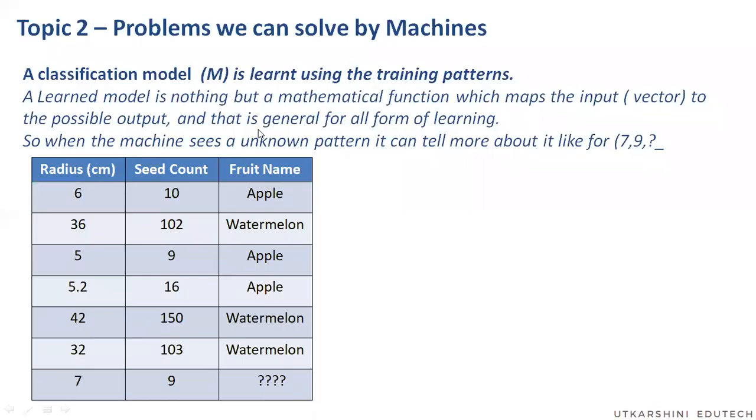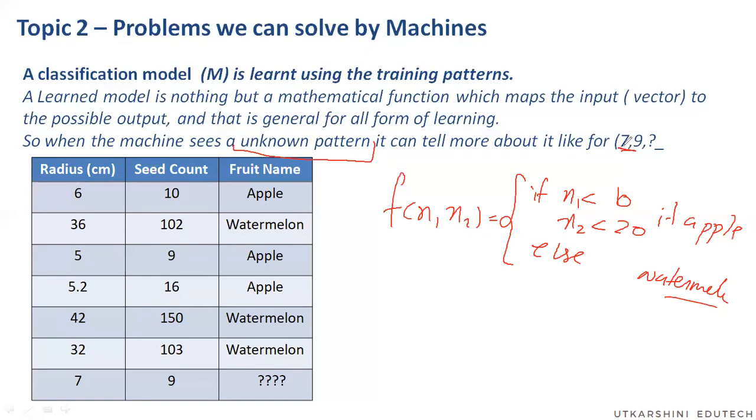Just to take an example here. Let's say that my model, the f of x1, x2, which I learned was based on both of these. So if x1 is less than 10, my radius is less than 10, and x2 is less than 20, it's apple, else, watermelon. So this is my classifier that I learned. So I will say that the machine is asked, okay, I don't know what this thing is, but it has seven seeds, seven centimeter radius, and it has nine seeds. What should it be? Seven is less than 10, nine is less than 20. So it falls in this category. So it passes the if condition. So it has something, it has similar pattern to the apples that I have. So I will classify it as an apple. So here I can put it as an apple.